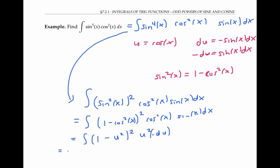I'll bring out the negative sign and multiply things out. One minus u squared squared is one minus two u squared plus u to the fourth. And this multiplies out to u squared minus two u to the fourth plus u to the sixth.